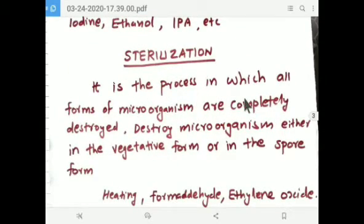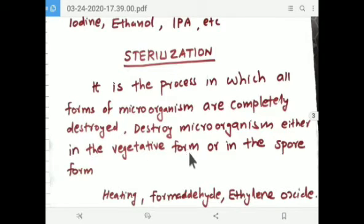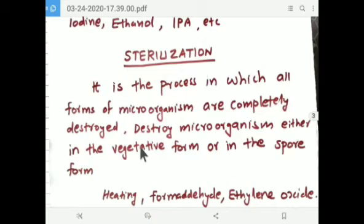Sterilization is the process in which all forms of microorganisms are completely destroyed — either in the vegetative form or in the spore form. Vegetative form means the microorganism is in active mode, while spore form means the microorganism is in inactive or dormant state. Microorganisms include bacteria, viruses, and fungi. In sterilization, all forms — both active and dormant — are killed.